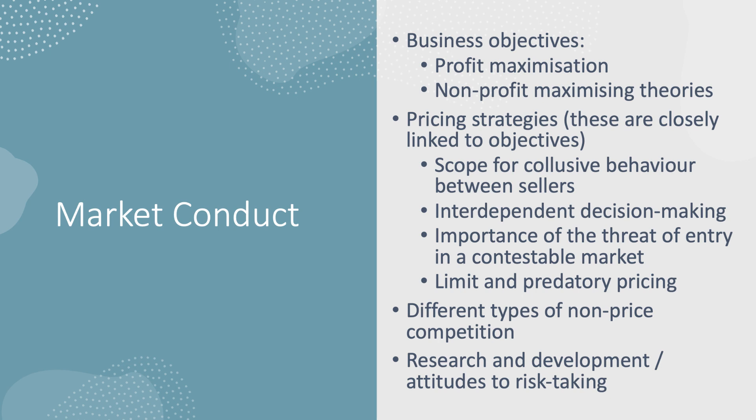Market conduct is basically what firms actually do in their industry. The key question is: how does market structure affect the pricing, output, and other decisions of businesses? This links strongly to business objectives, so please revise profit maximization and non-profit-maximizing theories including revenue maximization, sales maximization, and satisficing. Once you understand objectives, move on to pricing strategies and whether there is scope for anti-competitive behavior such as collusion between sellers.